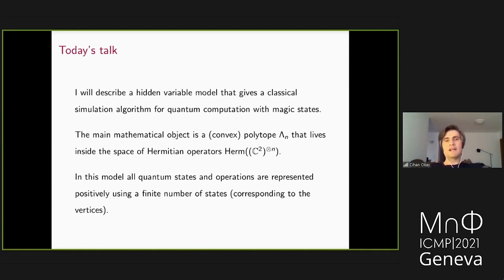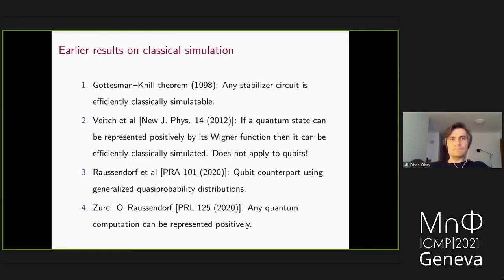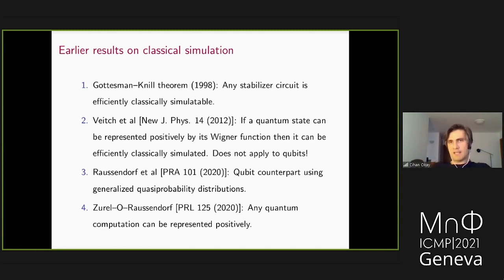There's a way to extend the odd-dimensional result to qubits using frames — overcomplete sets rather than bases — giving generalized quasi-probability distributions. This is our earlier result. Subsequently, we found a way to represent any quantum computation positively. The main object is the polytope λ_N of Hermitian matrices with trace one such that the trace with any stabilizer state projector is non-negative.